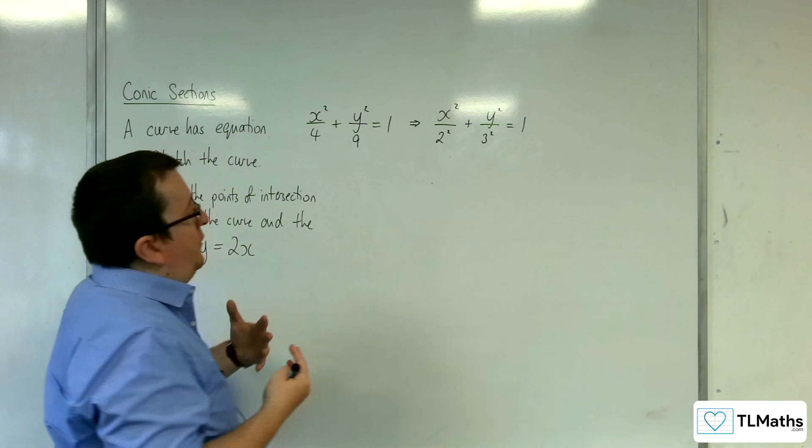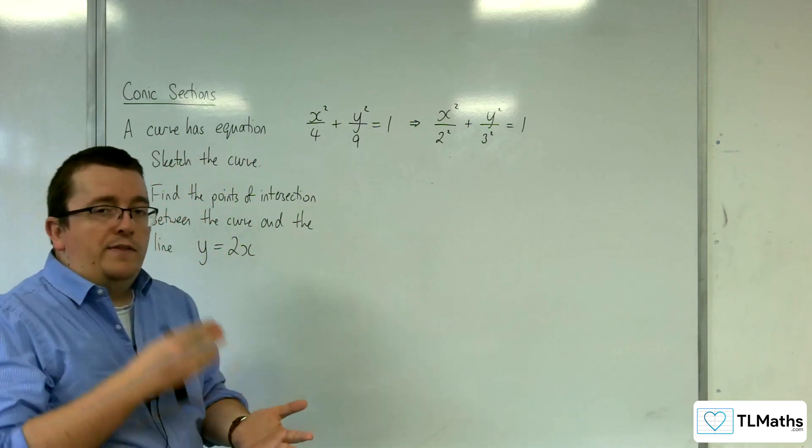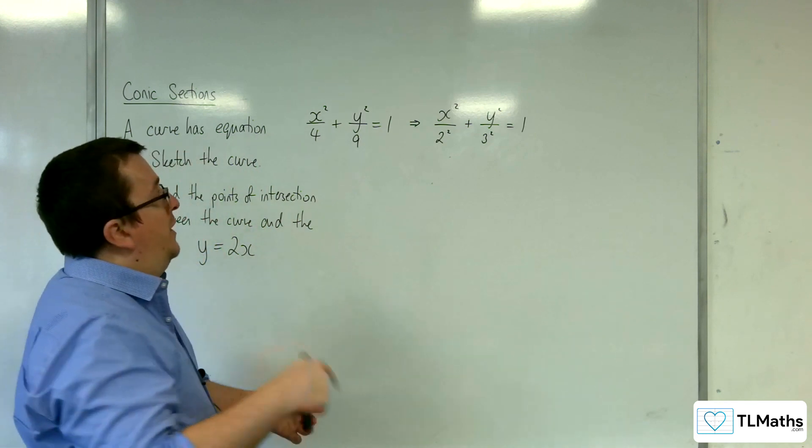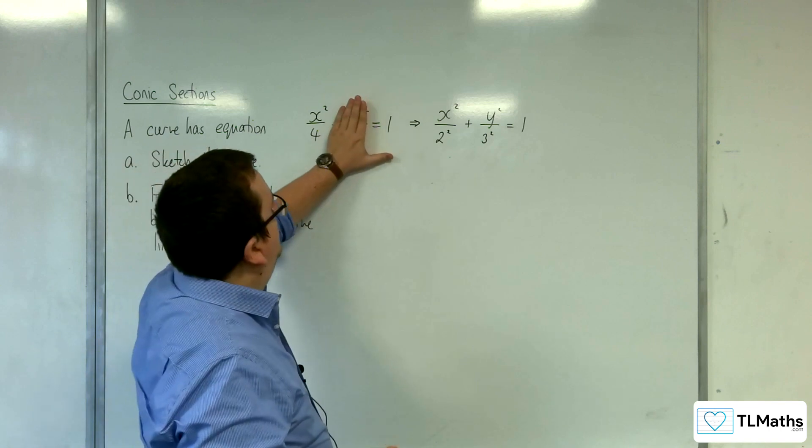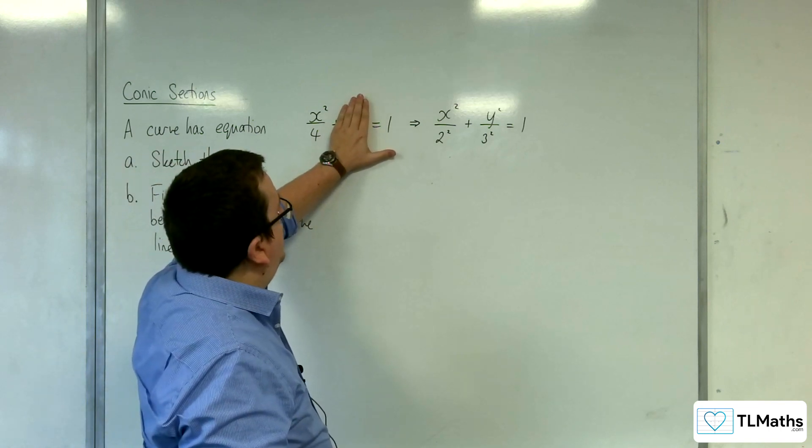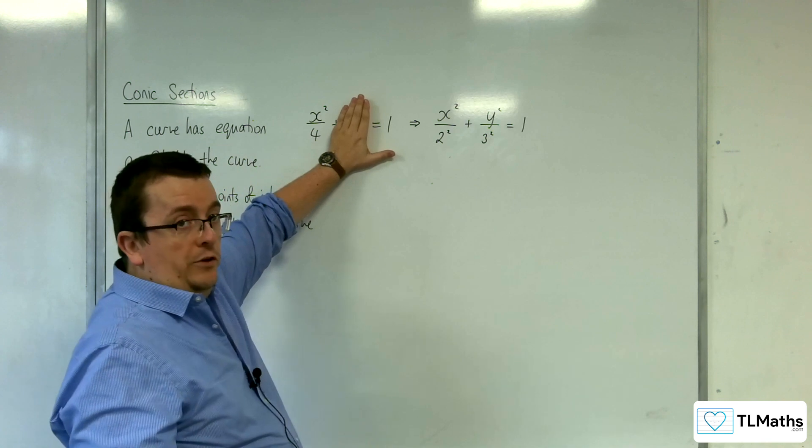Alternatively, you can say to yourself, where does it cross the x-axis? That's going to be when y is 0. So cover up that bit and then solve that equation. So you get plus or minus 2.